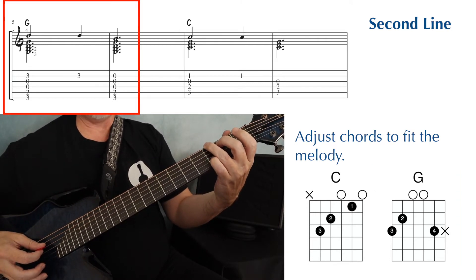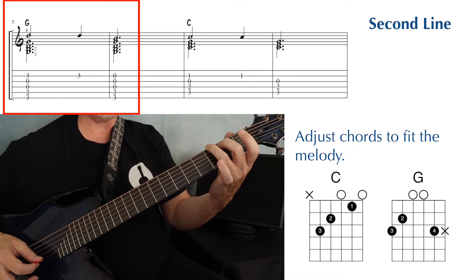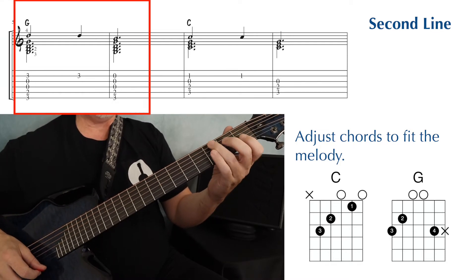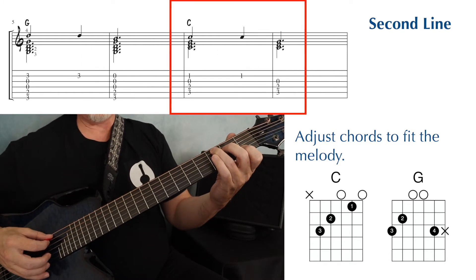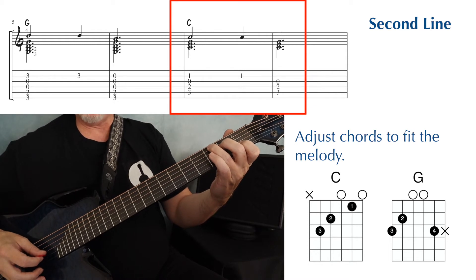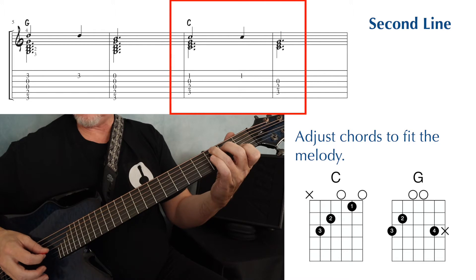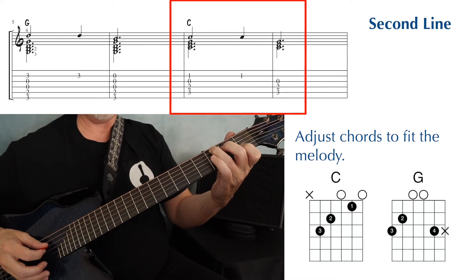Next measure, all we have to do is strum through the second string, but lift the pinky up. Then we have a C chord again. This time we're strumming through the second string because that's our melody note and another C chord, but now we're strumming through the third string because that's our melody note.